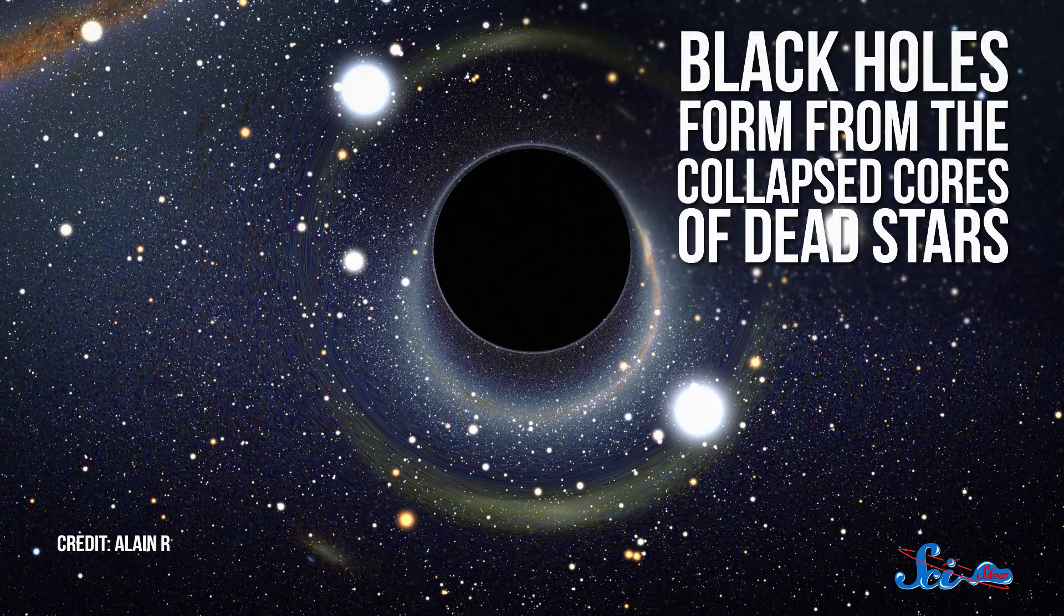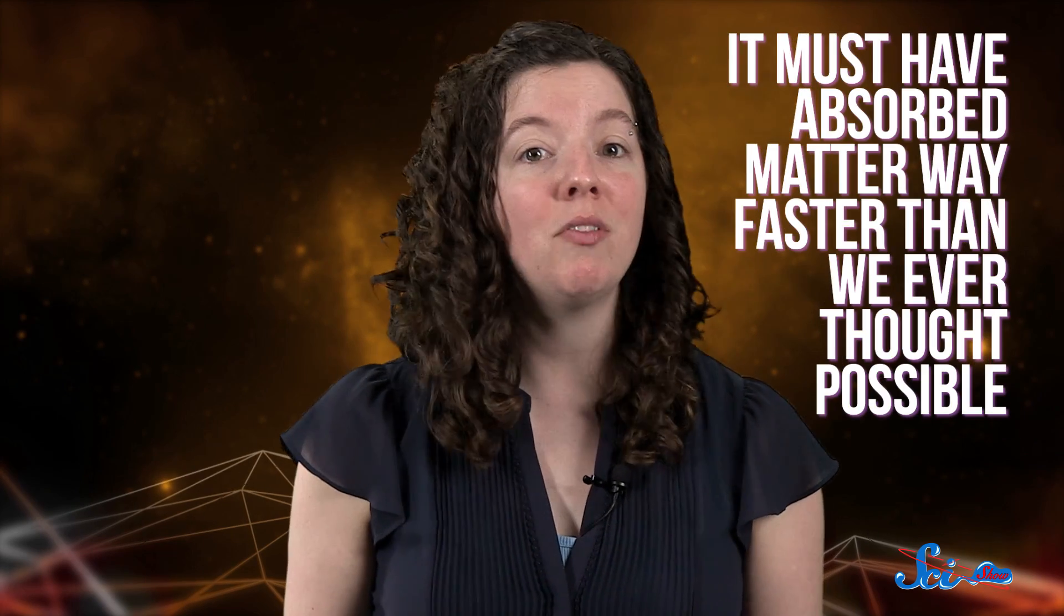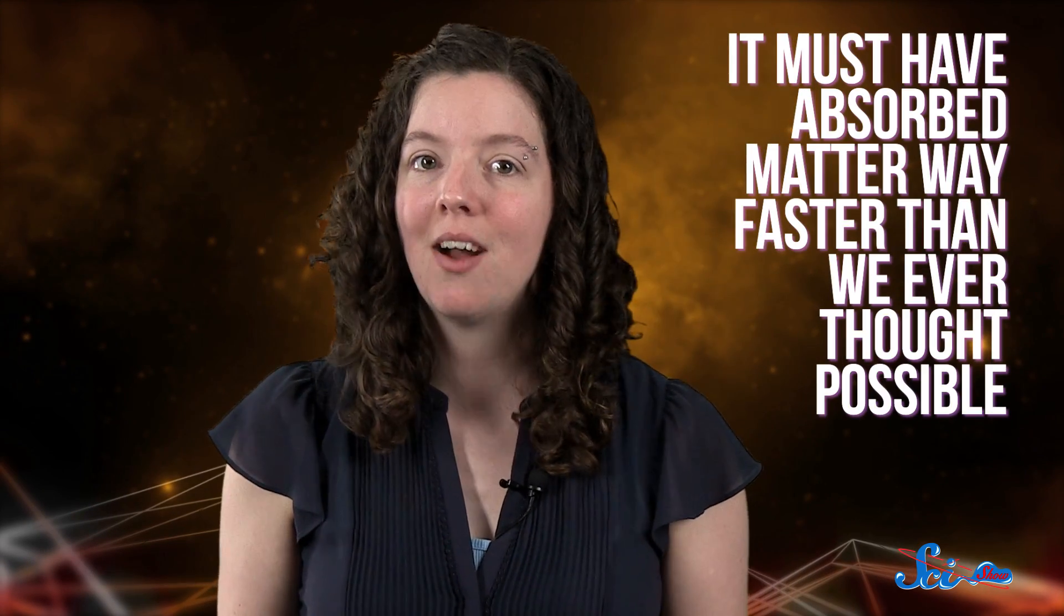Because black holes form from the collapsed cores of dead stars, and those that form at the center of galaxies, like this one, grow as they absorb more gas. So if a black hole this huge showed up only 900 million years after the Big Bang, it must have absorbed matter way faster than we ever thought possible.